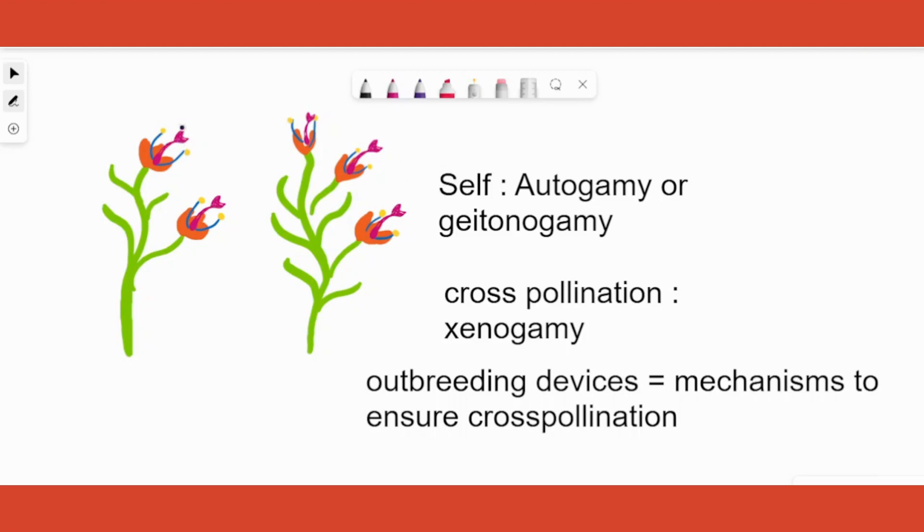It can happen in different ways. The pollen grain from the same flower can fall on the stigma, that is the first option, and that is called autogamy. Let's say the flower has some wind around and pollen grain of this flower has fallen on the stigma of another flower but on the same plant, you call that as geitonogamy.